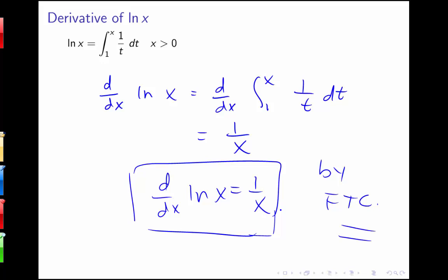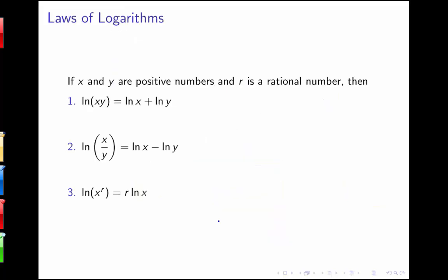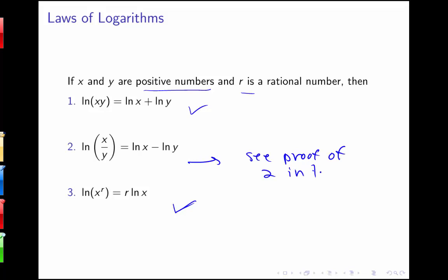We're going to use this definition and derivative rule to prove some of the log properties we've been using all semester. If x and y are positive numbers and r is a rational number: the natural log of xy equals ln x plus ln y; the log of x over y equals log x minus log y; and the log of x to the r equals r times ln x. We'll prove properties 1 and 3, and note that the proof of 2 appears in the text.